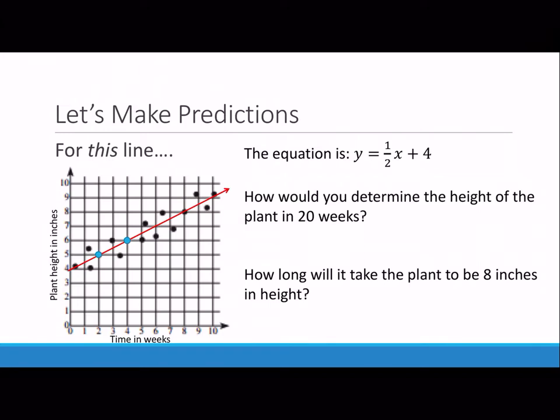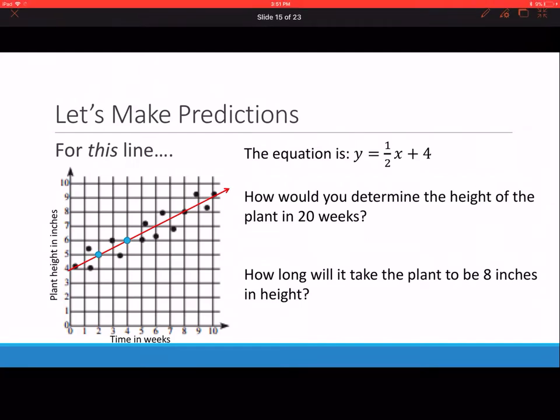For this line, the exact same example from yesterday, we drew the line and determined that the slope was 1 half and the y intercept was 4, and we determined that the equation for this line is y equals 1 half x plus 4.